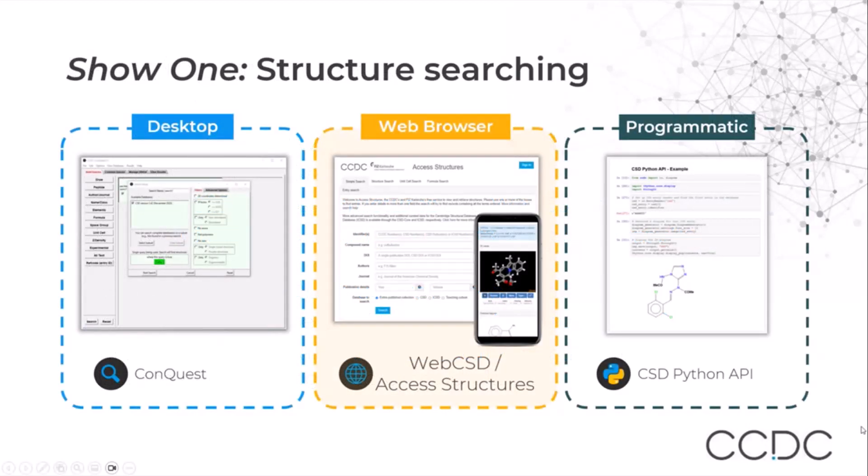There are three ways to search the CSD. The first one is using the desktop software, Conquest. Then we have the web browser using web CSD to access structures, and we have a programmatic way using CSD Python API. The focus of this module is the web browser using web CSD.